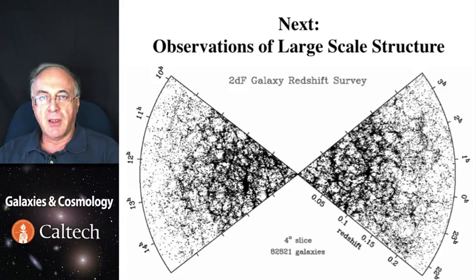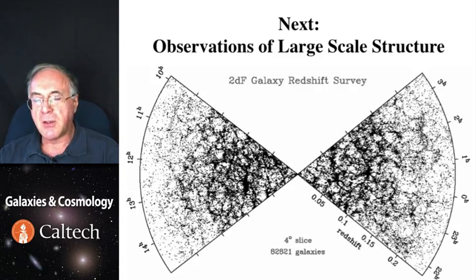So this is our theoretical understanding of the formation of large scale structure and its evolution in the universe. Next, we will start talking about actual observations of the large scale structure.